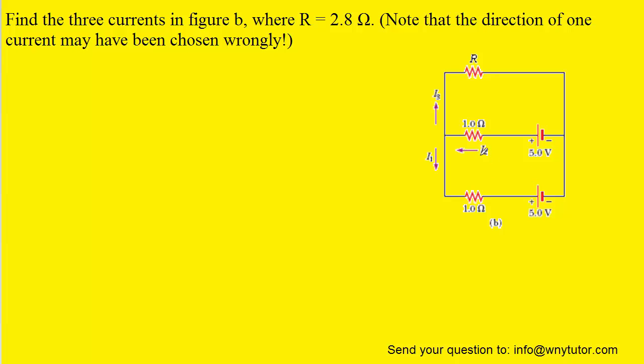One of Kirchhoff's rules is known as the junction rule. A junction is simply where the circuit splits into a T-shape. For example, right here would be a junction. According to the junction rule, the total current flowing into the junction will equal the total current flowing out of the junction.